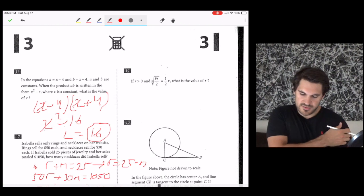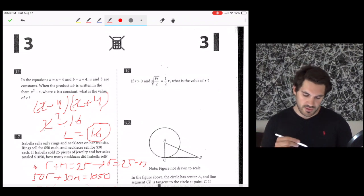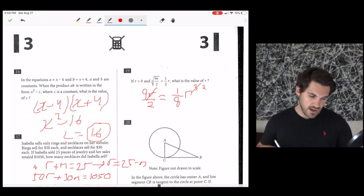Number 19. If R is greater than 0 and the cube root of 9R over 2 equals 1.5R, what is the value of R? If we have a cube root, let's cube everything. If we cube the left side, we'll get 9R over 2. If we cube the right side, remember, cube everything. This would be 1 over 8 times R cubed. Because 1.5 times 1.5 times 1.5 is 1 over 8. R times R times R is R cubed. If we have an R on the left side and an R cubed on the right side, we can cross up this R, and this becomes R squared. At this point, 9 over 2 equals R squared over 8. If we cross multiply, 2R squared equals 72. Divide both sides by 2. R squared equals 36. So R equals 6.